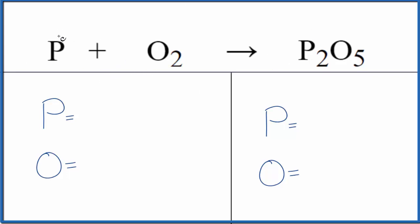Let's look at the type of reaction. We have phosphorus and oxygen, two things combined to form one substance. That's a combination, also called a synthesis reaction.